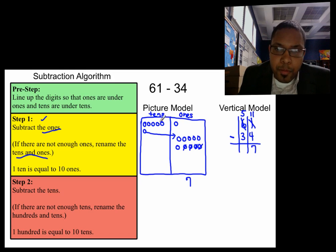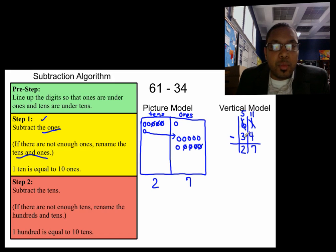One, two, three. So I have how many tens? One, two tens. And I put two tens here and two tens here. Therefore, the answer to this problem of 61 minus 34 is 27.